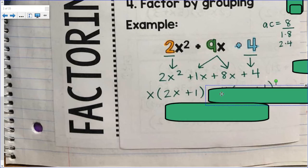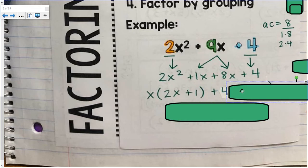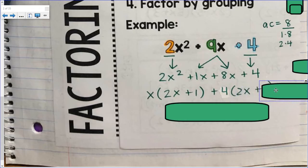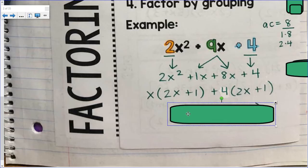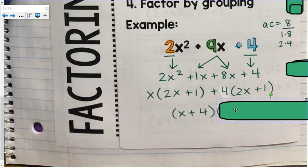The GCF of 8x plus 4 would be positive 4. 4 times 2x is 8x. 4 times 1 is 4. We know we're on the right track because we see the twins. Once we see the twins, our factored form are the GCFs. x plus 4.